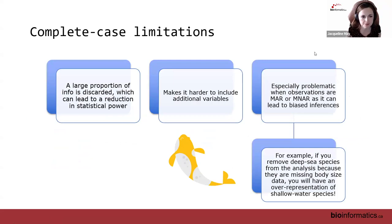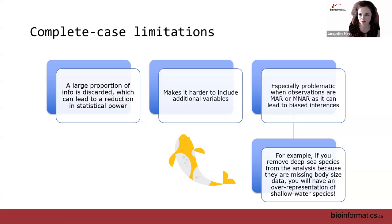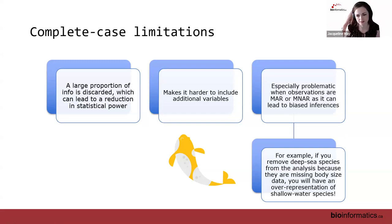There are some limitations to complete case analysis. We are throwing away a lot of information, which can lead to a reduction in statistical power and makes it harder to include additional variables — as we add columns, we squeeze our data together and have fewer rows with data available for all variables. It's especially problematic when observations are missing at random or missing not at random, as it can lead to biased results. For example, if you remove all your deep sea species because their body size data is missing, you'll have over-representation of shallow water species.